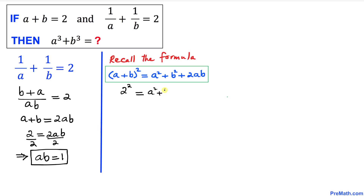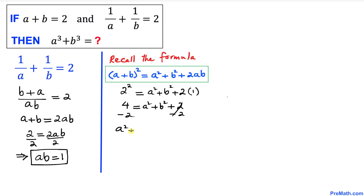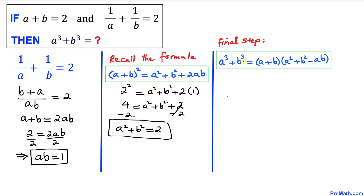Substituting: 2² equals a² plus b² plus 2 times 1. So 4 equals a² plus b² plus 2. Subtracting 2 from both sides, our a² plus b² value turns out to be 2.